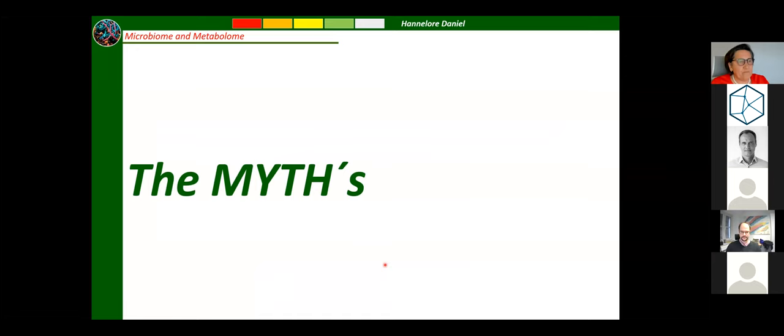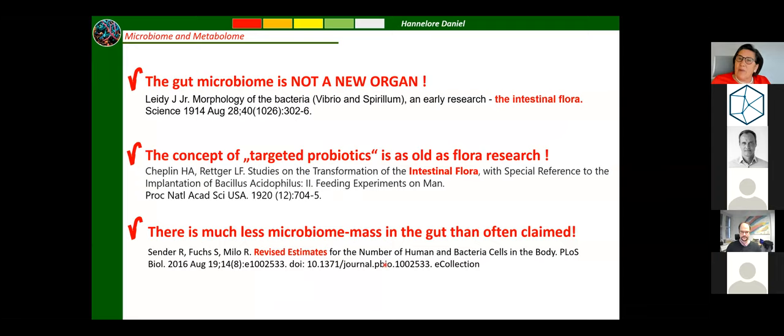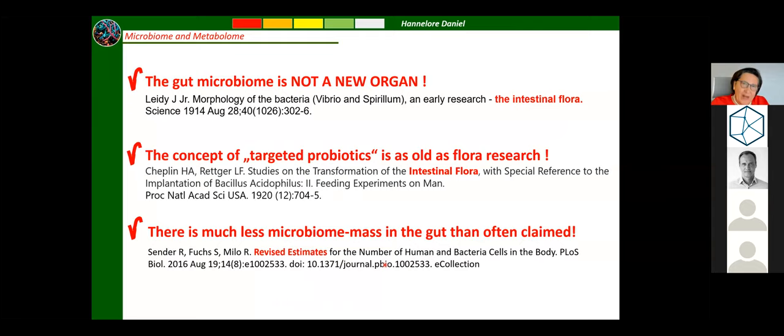Let's start with the myths. The first myth is that the gut microbiome is not a new organ. If you use the search string 'intestinal flora,' you can identify that in 1914 the first paper appeared on the morphology of bacteria in the intestine. Even the idea of using probiotics to steer changes in the microbiome is almost as old, with a reference to a PNAS paper in 1920.